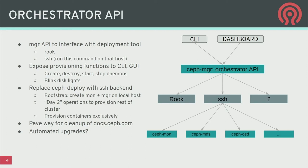The orchestrator API is one of the most exciting things coming in Octopus. It creates an abstraction that allows Ceph to call out to whatever deployment tool provisioned it. Our focus will be on two implementations: Rook, for cases where Ceph is deployed inside Kubernetes, and the SSH orchestrator, which will be a bare-bones trivial orchestrator — the moral successor to Ceph Deploy. This allows you to create new daemons, expand to new nodes, and remove daemons to contract the cluster.